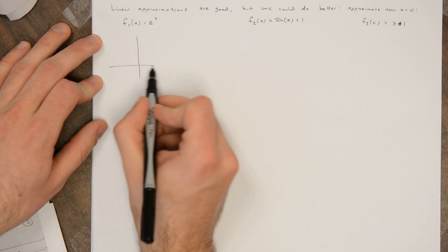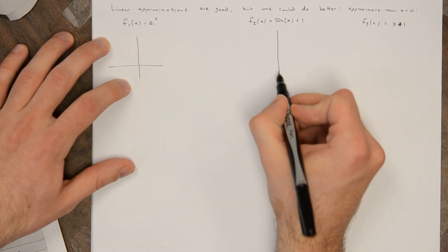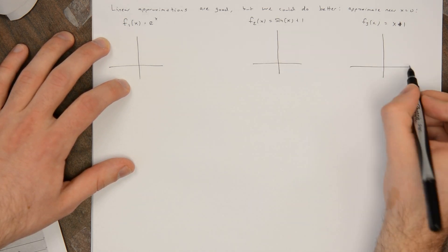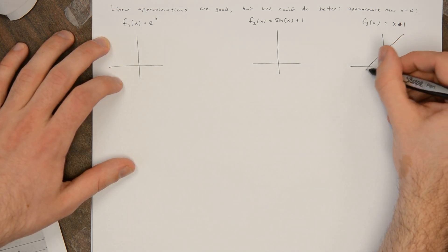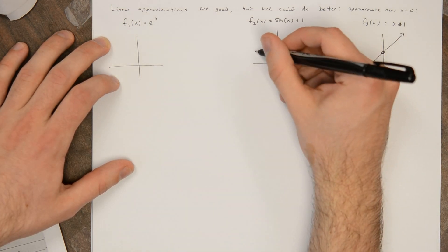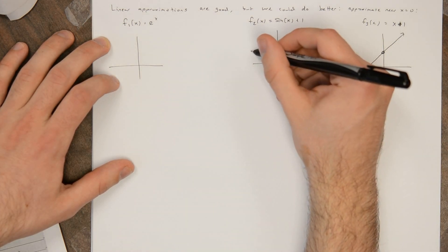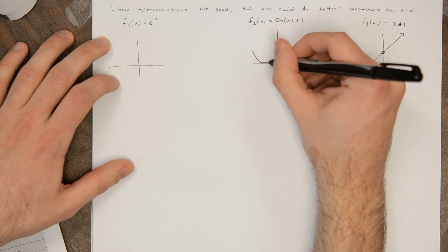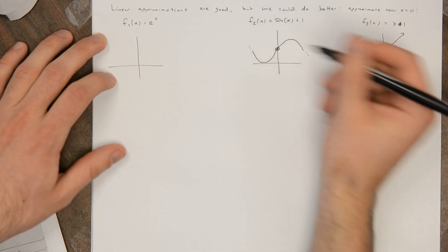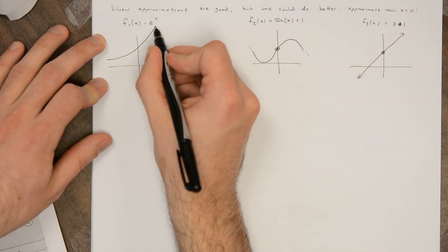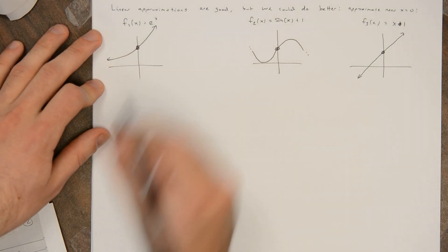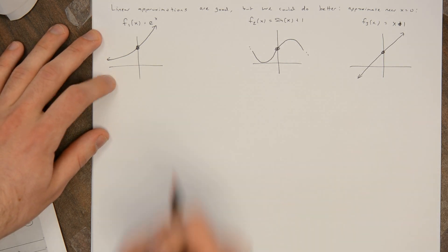So for e^x, sin(x) + 1, and x + 1, sine of x + 1 is going to look like this, and we know what e^x looks like. A natural thing to do is to use the tangent line approximations to each of these functions at x = 0.